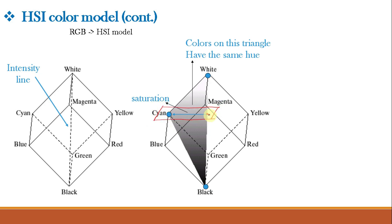The intersection of that plane with the intensity axis gives a point with intensity value in the range 0 to 1: white gives 1 and black gives 0. All colors on the shaded triangle have the same hue — cyan — because black and white components cannot change hue. Intensity varies between white and black, while saturation is minimum at the intensity line and maximum at the boundary of the cube. By rotating the shaded plane along the vertical axis we obtain different hues.